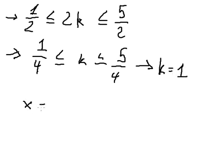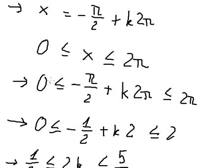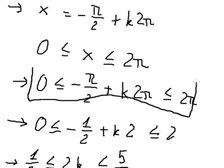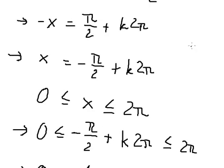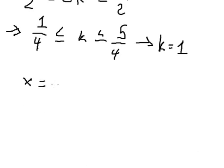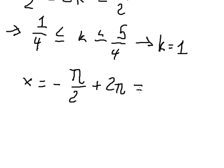And we can find the value of S belonging to this interval. So we put K equals to 1 here, and we have negative π over 2 plus 2π. And this gives us 3π over 2.